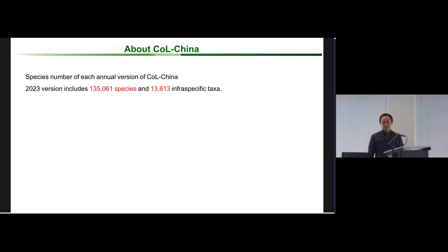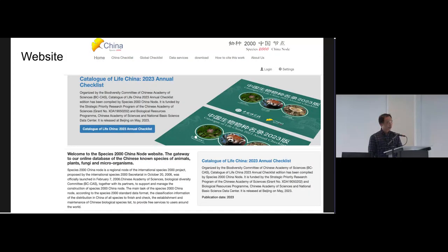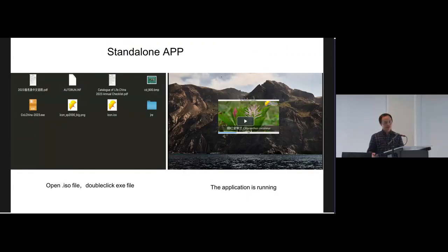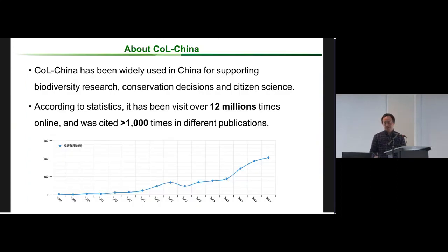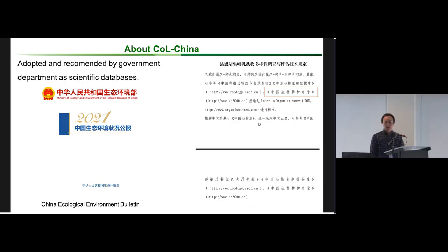COL China now includes over 135,000 species in the 2023 version. COL China is released through a website and standalone app that doesn't require internet, and through API for services. It is widely used in China and has been cited more than 1,000 times in different publications. It was also adopted and recommended by government departments as a formal scientific database basis.